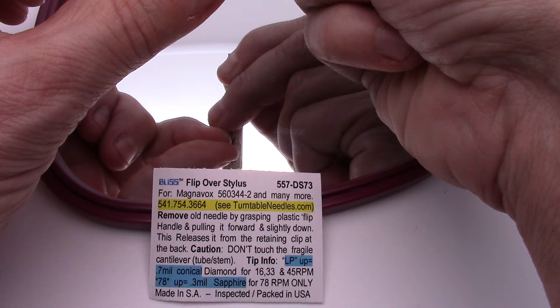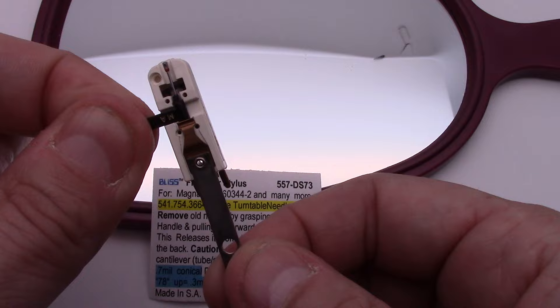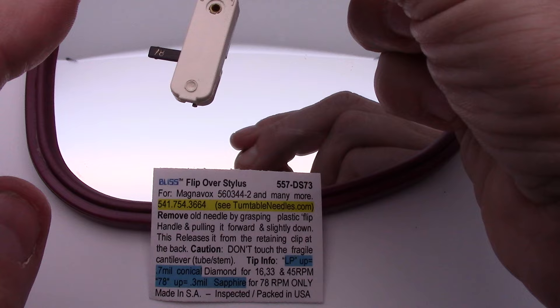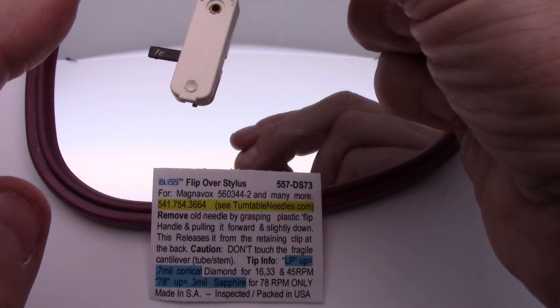All right, so there you go. That's how you replace it. When you got 78 up towards the ceiling, that's for playing the really old 78 RPM records—10 inch records usually from like World War One. When you have it flipped over on this side, it's going to say LP. That's for the more common 33s and 45s.